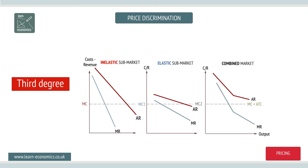When sub-markets can be kept apart, say through time or place, discrimination is possible — as with peak time travel tickets, which are sold at higher prices than off-peak tickets.